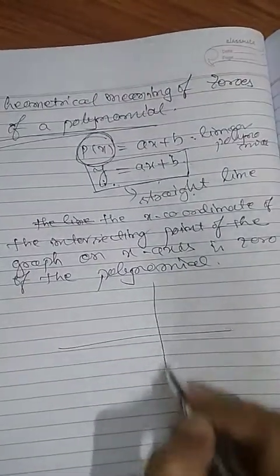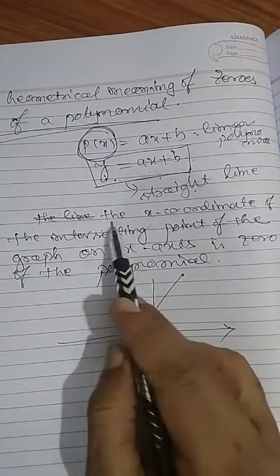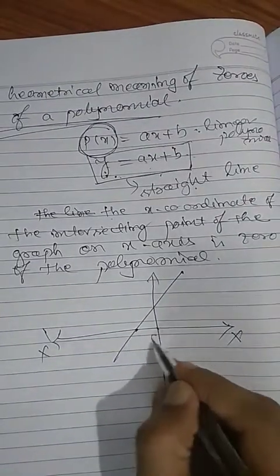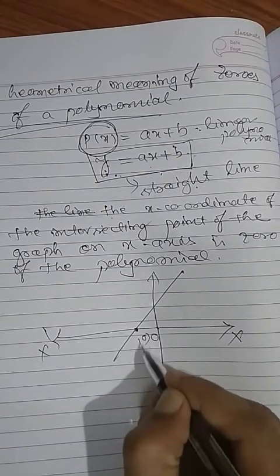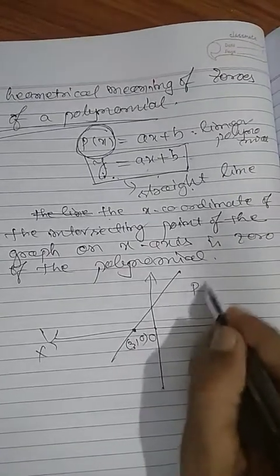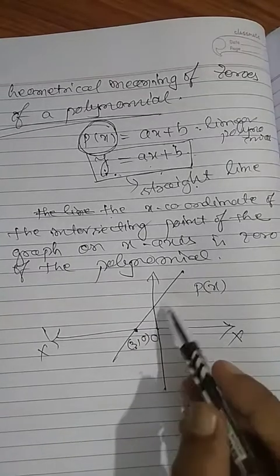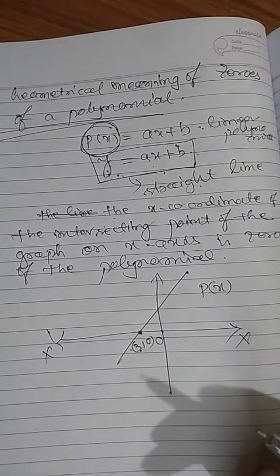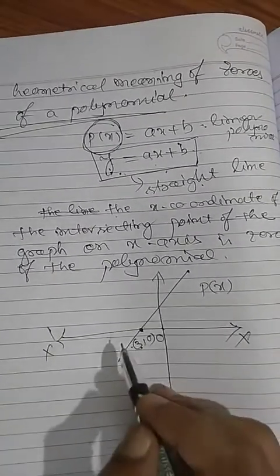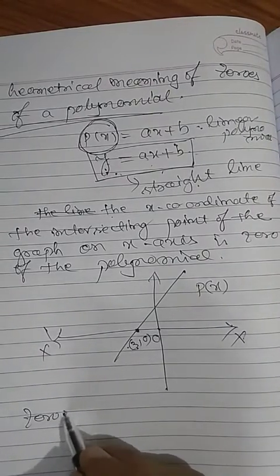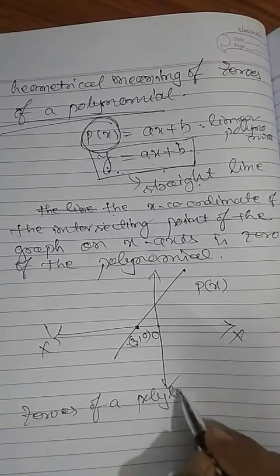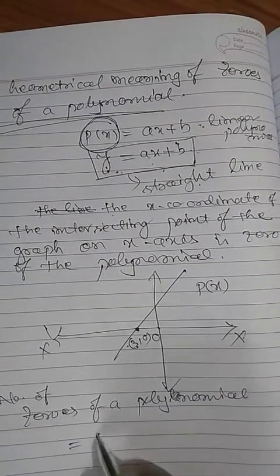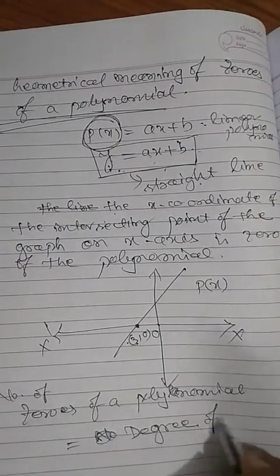If the graph is like this and the line intersects the x-axis at a point, just I told the x-coordinate there — where the graph is intersecting the x-axis. This is the origin. The x-coordinate of that point — on the x-axis y is zero — suppose the x-coordinate is 3, so 3 is the zero of the polynomial. In a linear polynomial you get one zero, but if the polynomial is quadratic you will get two zeros — those zeros may be the same, but you will get two zeros.